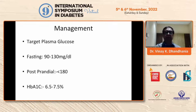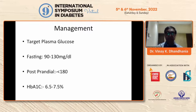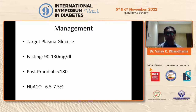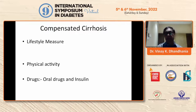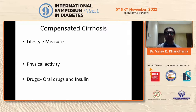For management, we should target fasting plasma glucose between 90 and 130, post-prandial less than 180, and HbA1C 6.5 to 7.5 depending upon compensated versus decompensated liver disease. We need to monitor very closely. Compensated cirrhosis needs lifestyle measures and physical activity, and can be managed with oral drugs and insulin as required. Compensated cirrhosis is where there are no complications like ascites, variceal bleed, hepatic encephalopathy, anasarca, or hypoalbuminemia.